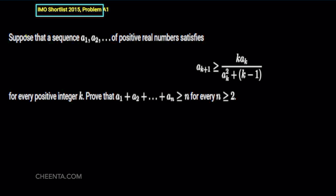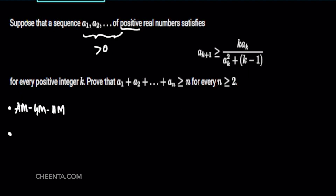When you're solving this problem, what first comes to your mind? Look at the data in the problem. The first piece of data is that a_i is a positive sequence. This automatically brings to mind the inequality tools of AM-GM and HM, which you can keep in your arsenal of techniques. Positive is a very important piece of data. Also, this is an infinite sequence, and we have to prove it for a general sequence of numbers.